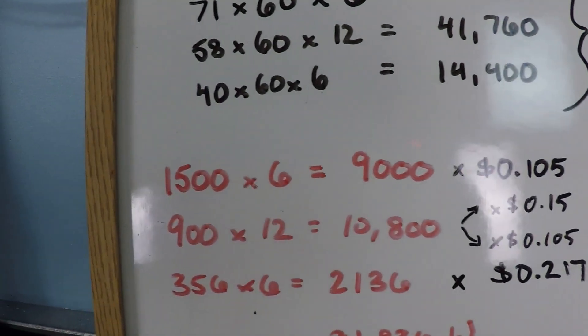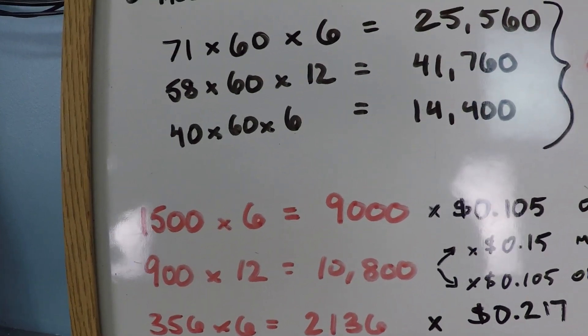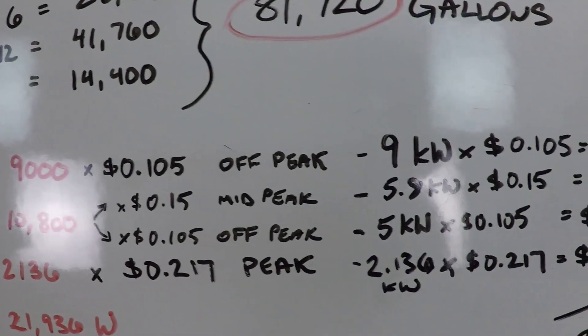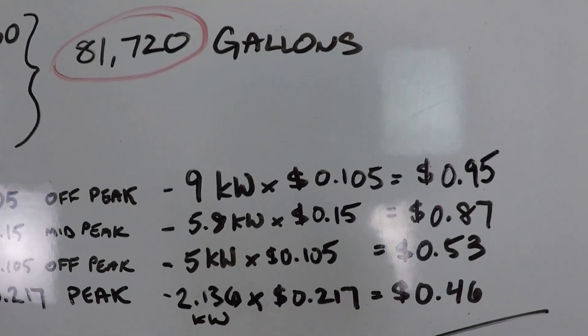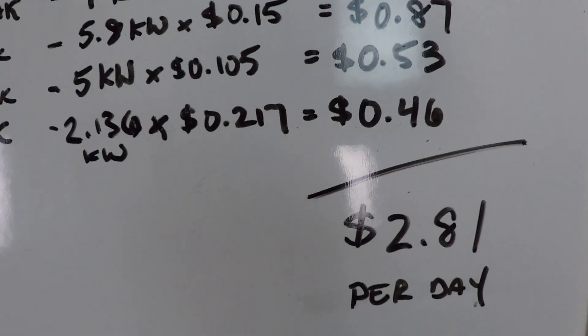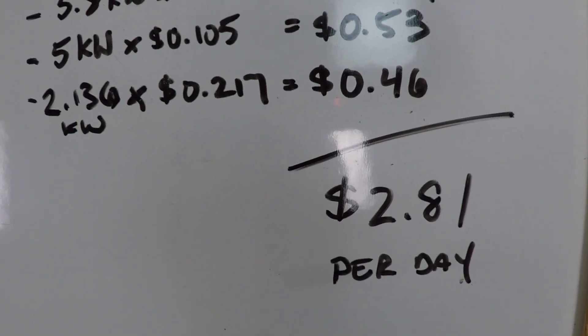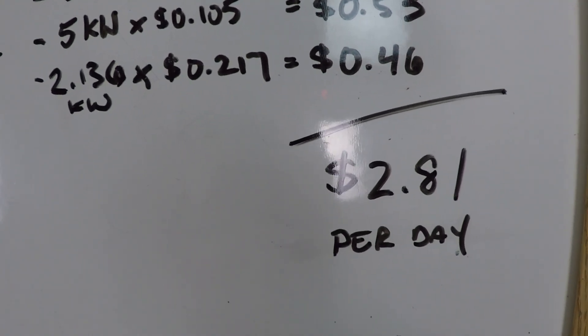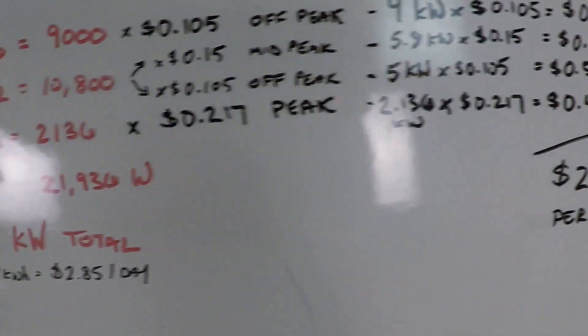And then for the remainder of the day we applied the mid-peak and the peak values. When calculated out you can see that $2.81 would be the actual cost based on variable electrical rates, which is actually very similar to that multiplier that I say to normally use, the 13 cents.